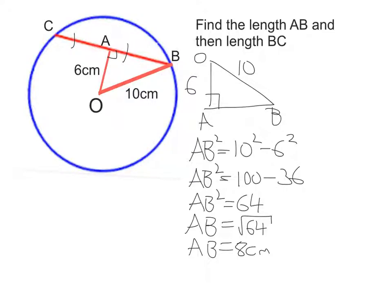So if AB is 8 centimeters, the whole distance C to B is double that from what we said before. So CB is going to be 16 centimeters.